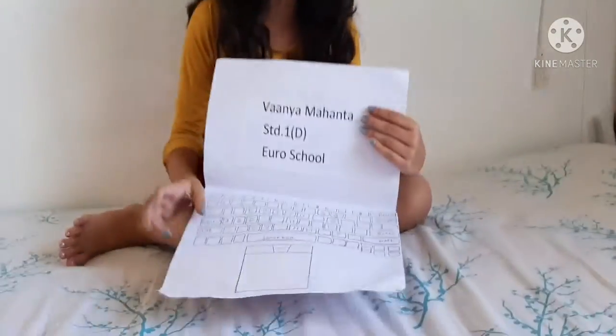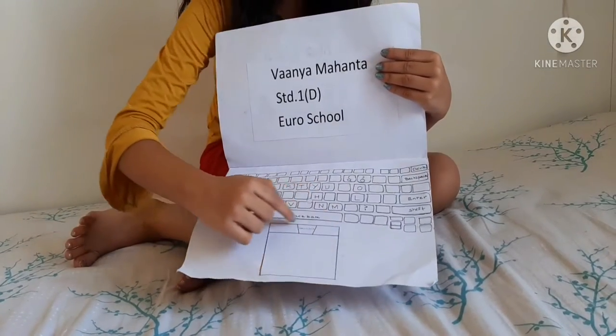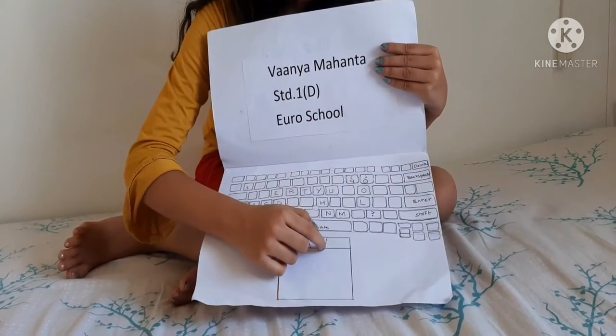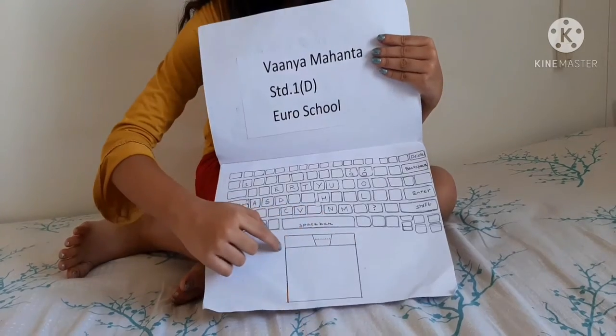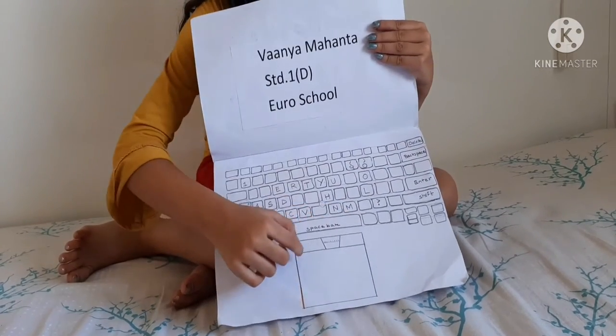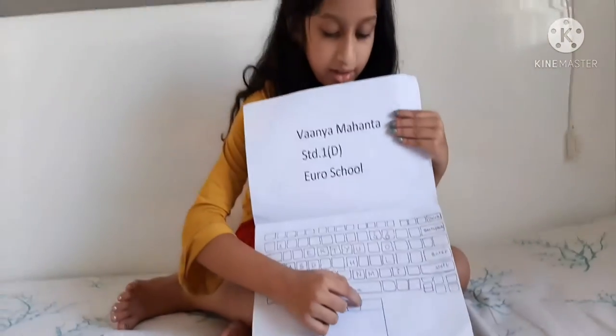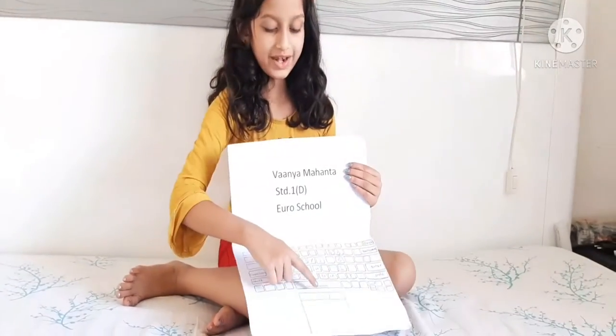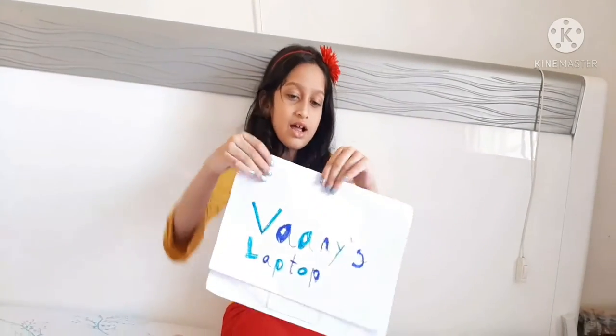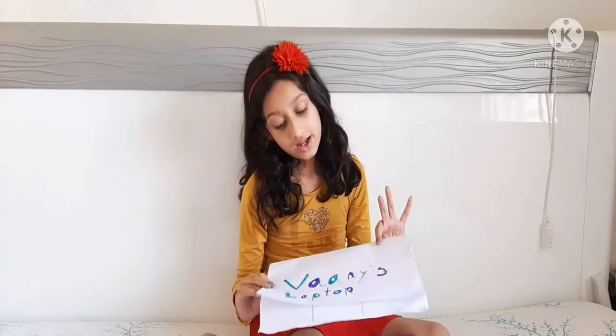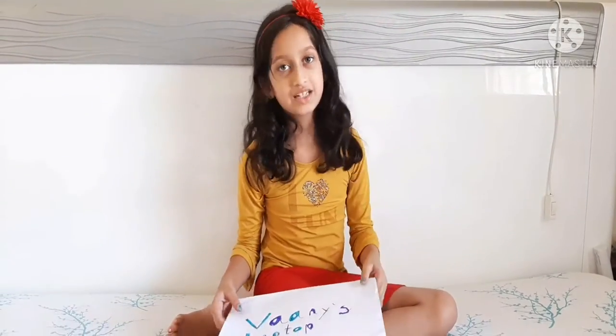Then draw a big rectangle, and then draw a small rectangle up here, just a straight line, then these two, and a line with one, two, three, four, five, six, seven, eight dots on the line. That's how you should make it. Write whatever you want — like I have written 'Vanya's Laptop.' You can write whatever your name is, and you can even put some design if you like.